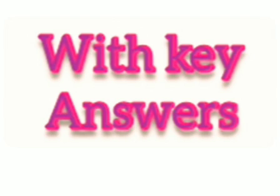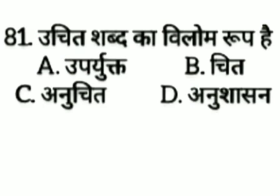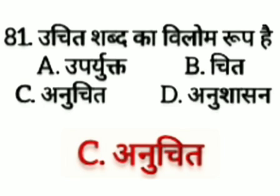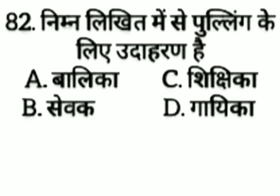Moving on to the first question: Uchit shabd ka vilom rup hai — option A: uparyut, option B: chit, option C: anuchit, option D: anushasan. The answer is option C, anuchit. Uchit shabd ka vilom rup hai anuchit.